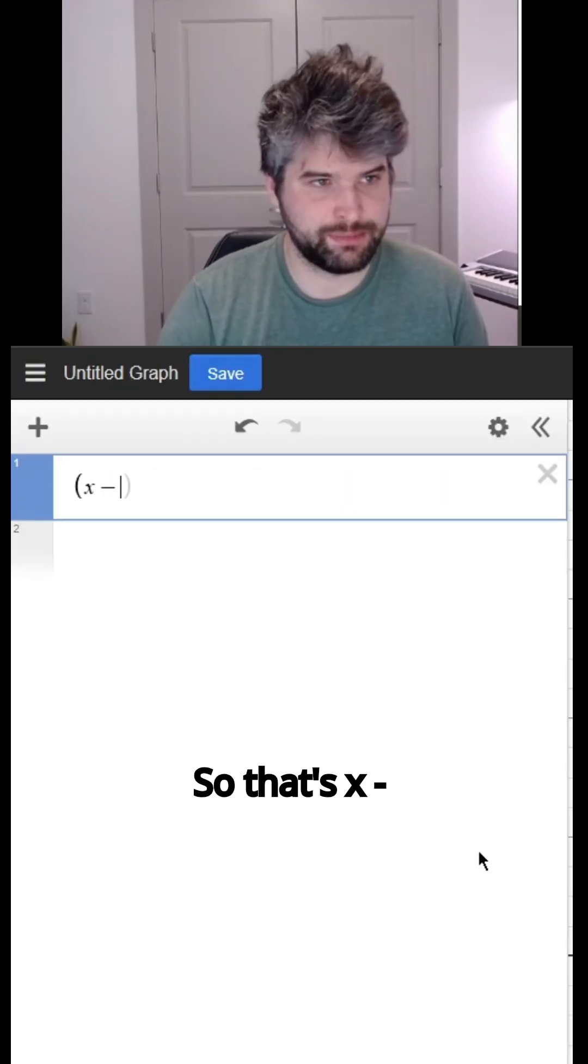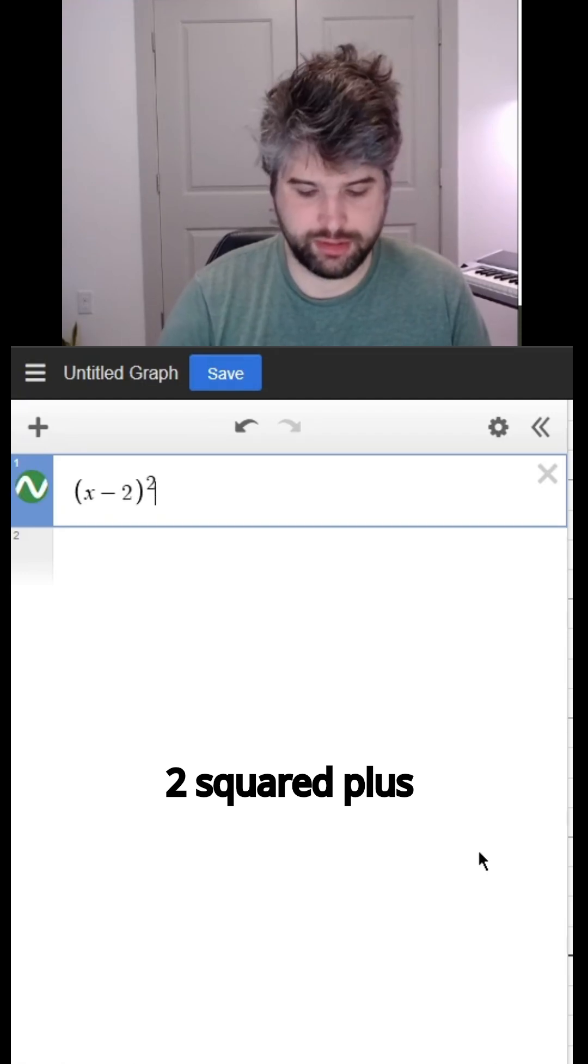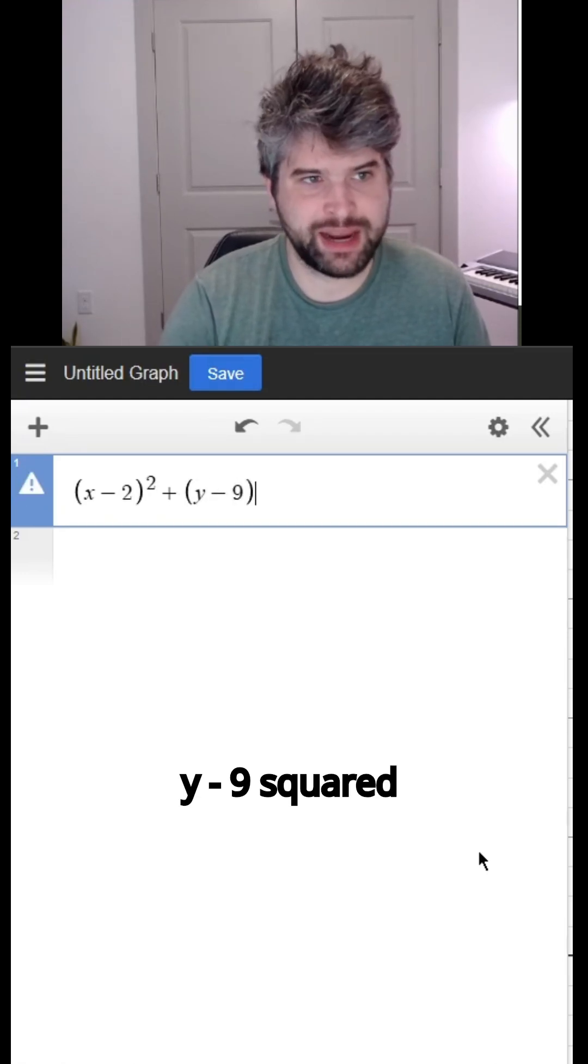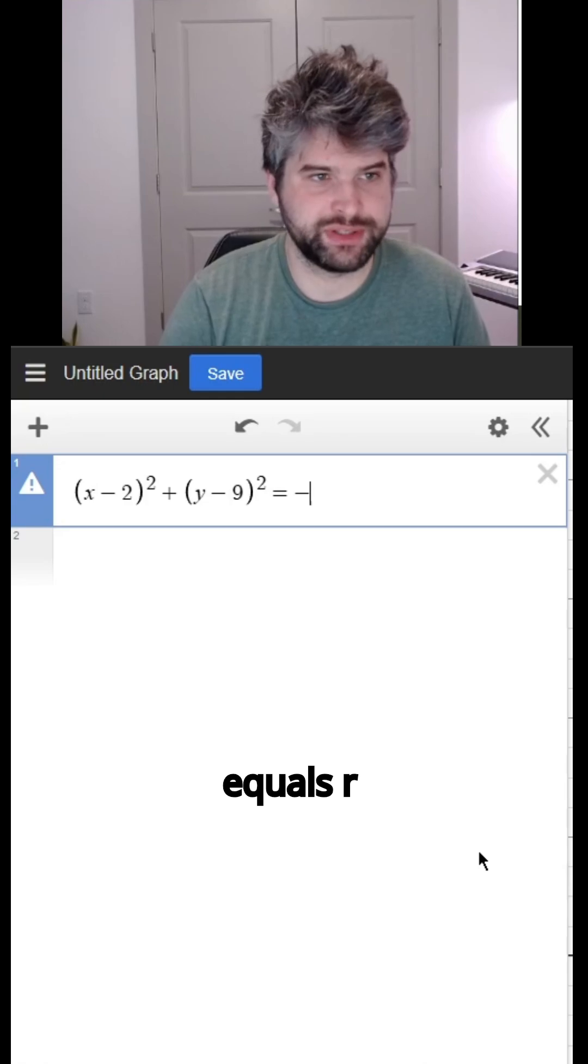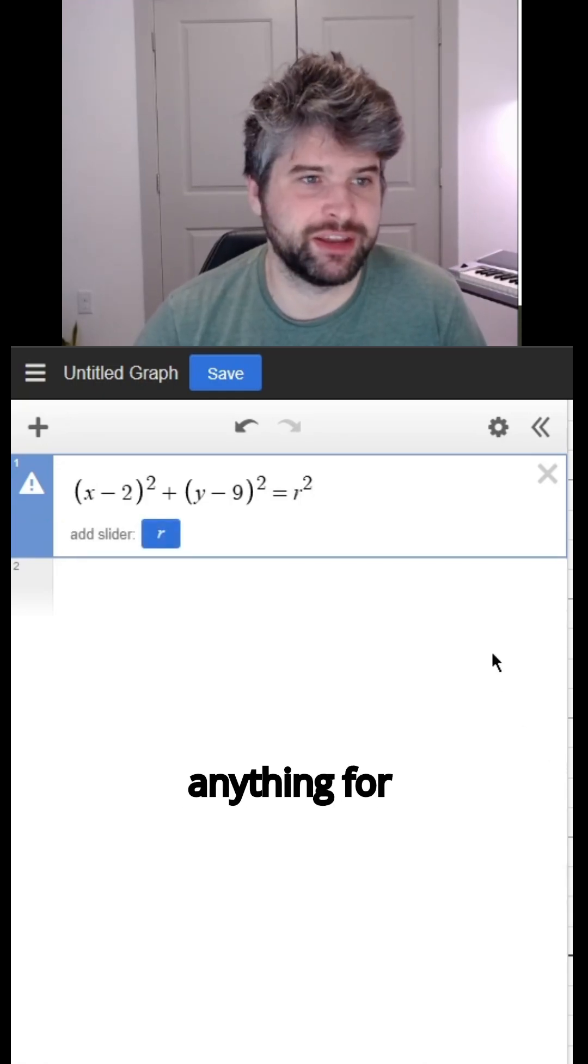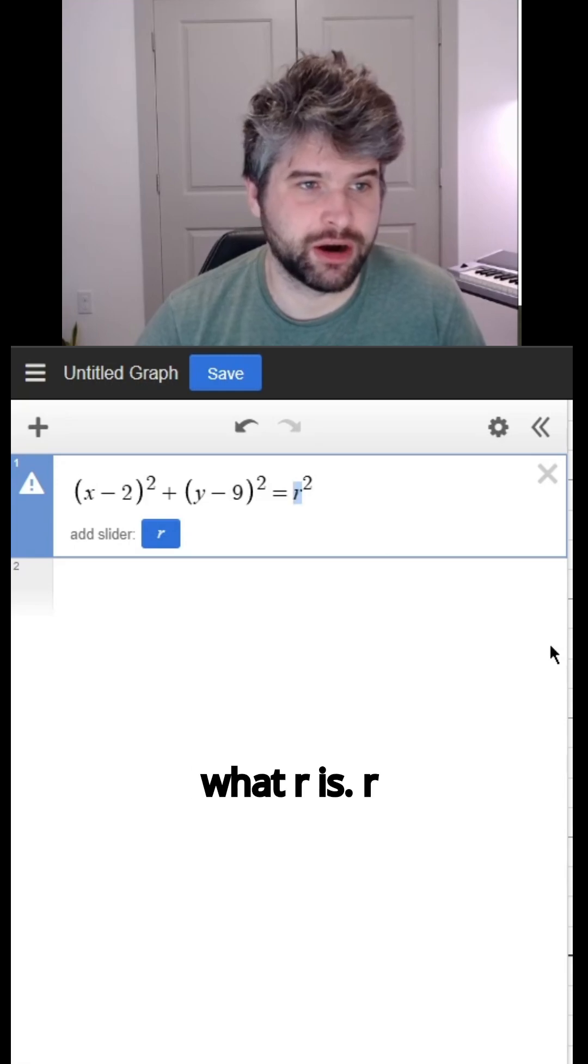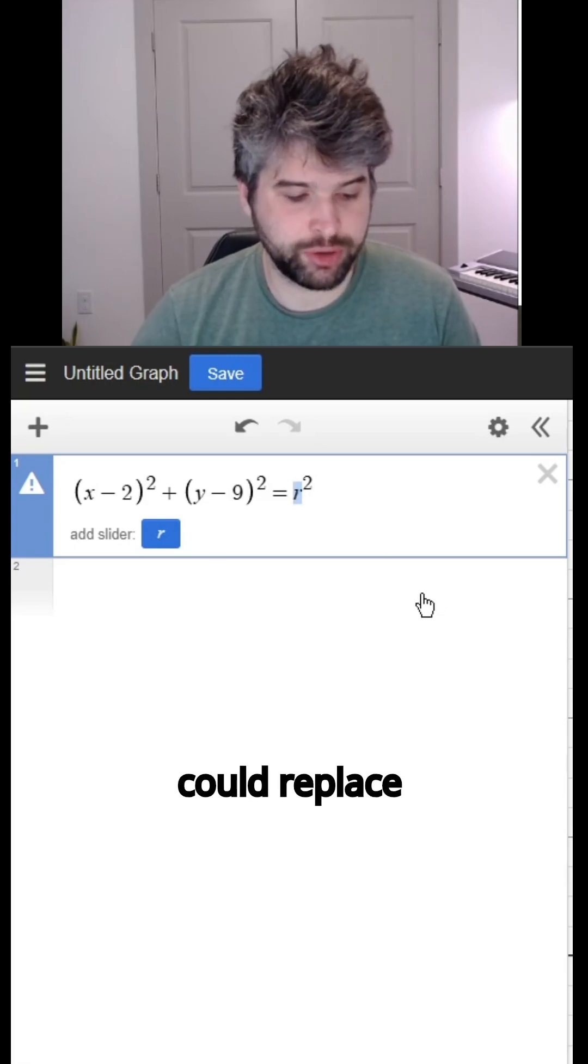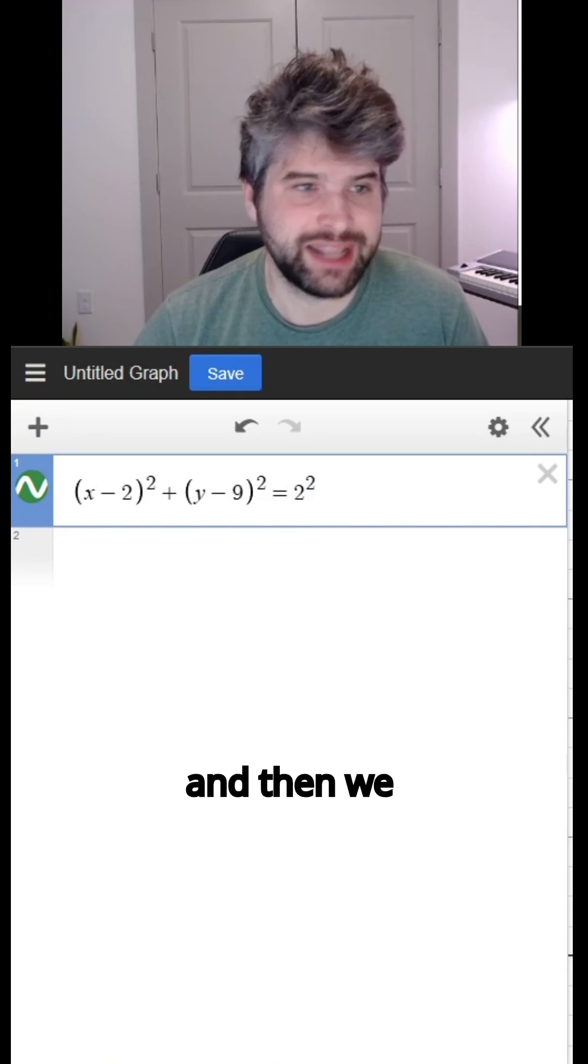So that's (x - 2)² + (y - 9)² equals r². All right, now Desmos isn't gonna graph anything for us because it doesn't know what r is. r is a constant, it's just a number. We could replace it with a number like two, and then we would get a graph.